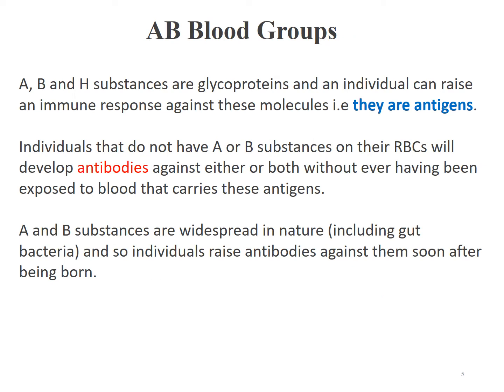Speaking of glycoproteins A, B, and H, these are all antigens that can elicit antibody production. For individuals that do not have antigen A or B on their own red blood cells, they will develop antibodies against these antigens, even though they have not been exposed to this blood type beforehand.